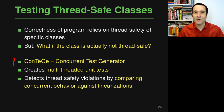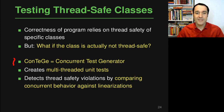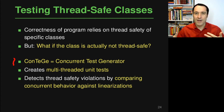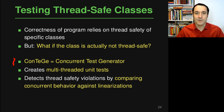By doing this, ContiG detects thread safety violations — thread safety related bugs — by comparing the concurrent behavior of these multi-threaded unit tests to linearizations of this concurrent behavior. Linearizations are essentially alternative tests where you put all the methods that happen concurrently into a single thread.